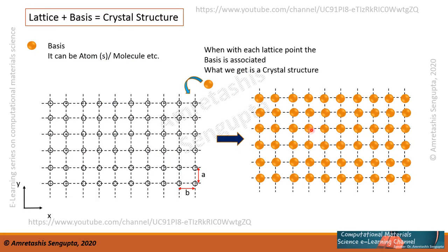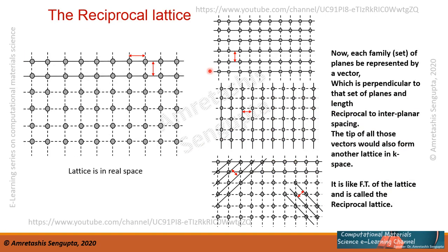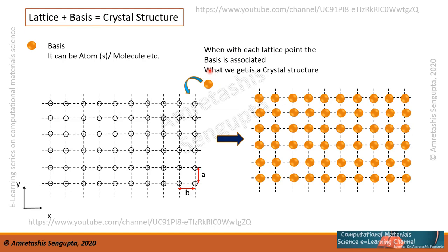We have all these structures — these blueprints — to build a crystal. For a crystal to come into being, all these lattice points, which are just geometrical blueprints in space, get associated with a so-called basis. The basis can be an atom, a number of atoms, or a molecule depending upon the type of material. When each lattice point is associated with a basis, what we get is a crystal structure. So: lattice plus basis equals crystal structure. This crystal structure — and the lattice — are in real space.